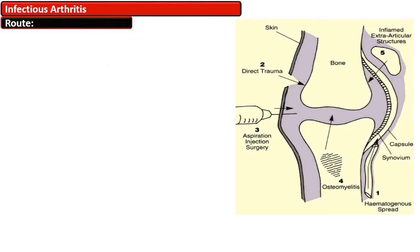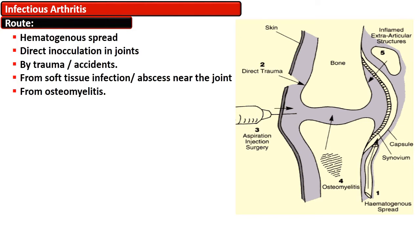The infective organism can enter into a joint by hematogenous spread. They can be inoculated directly through aspiration, injection, or by surgery. They can also enter through trauma or accidents, or by extension from soft tissue injury or an abscess near a joint.